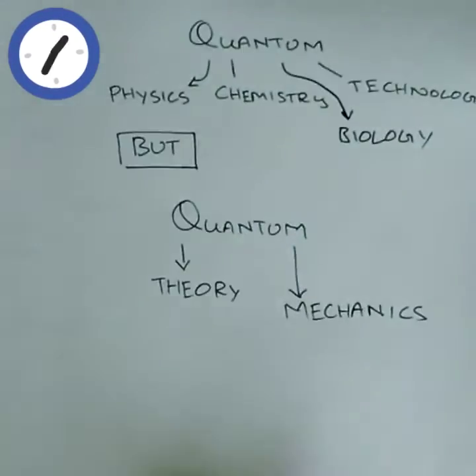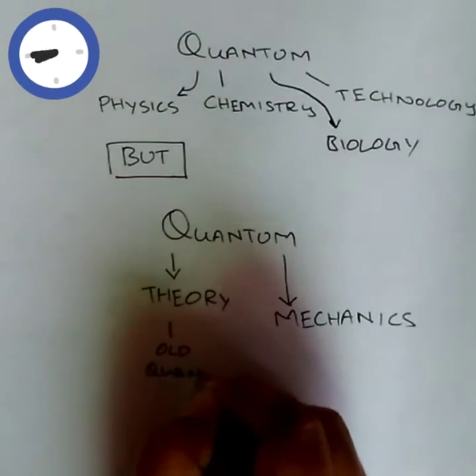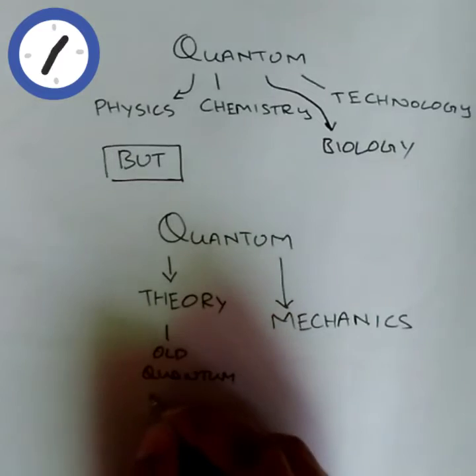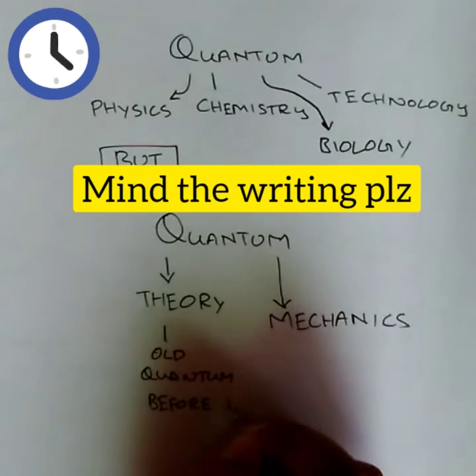Well, quantum theory is the old, right? This was used before the 1920s by Planck, and it was developed by Planck, Albert Einstein, Niels Bohr, and also de Broglie, etc.